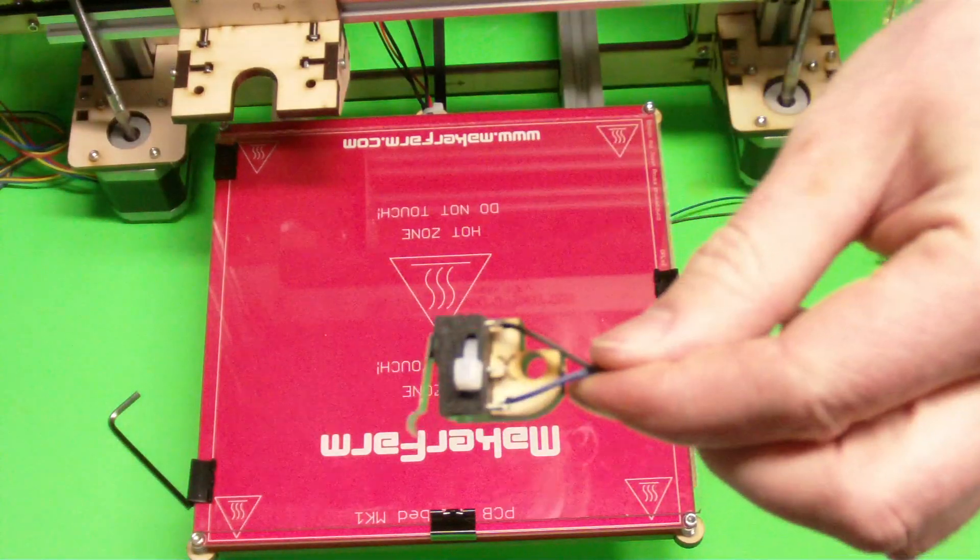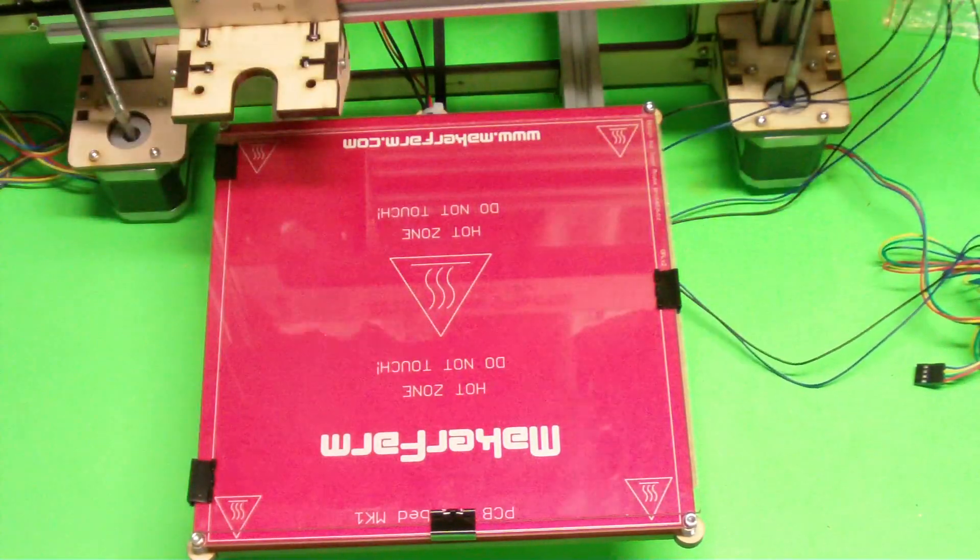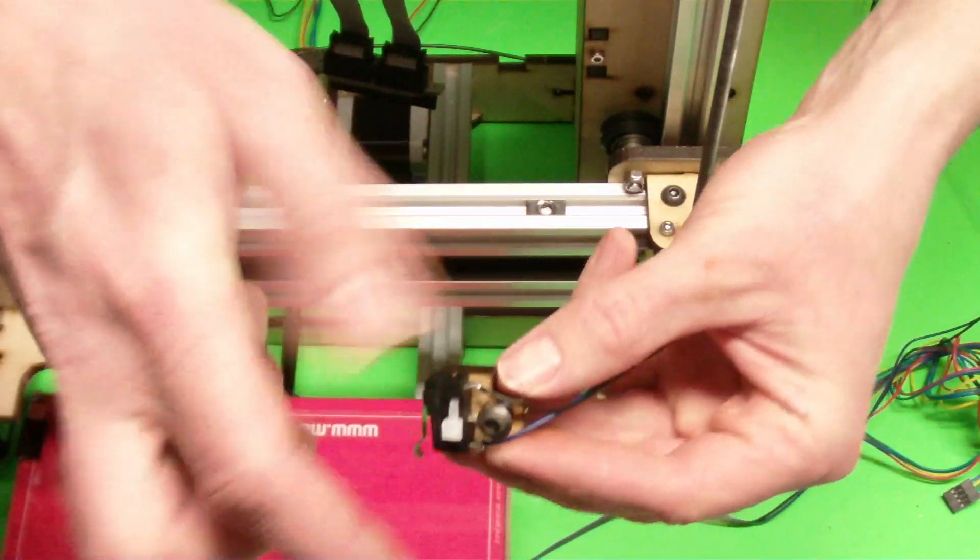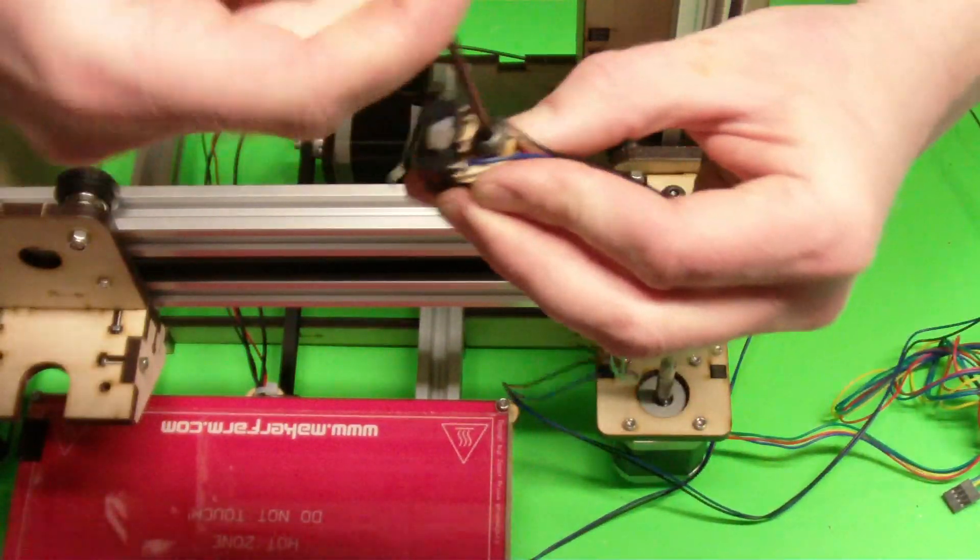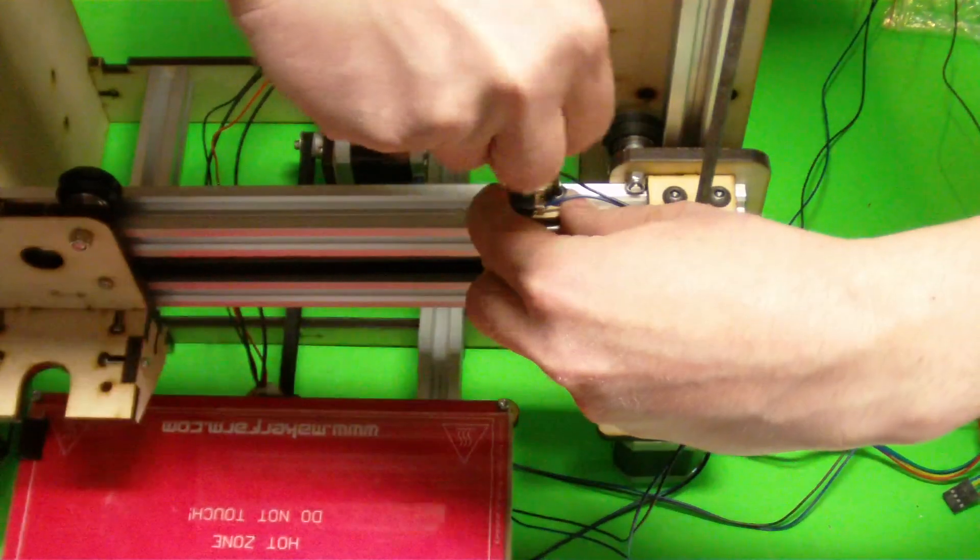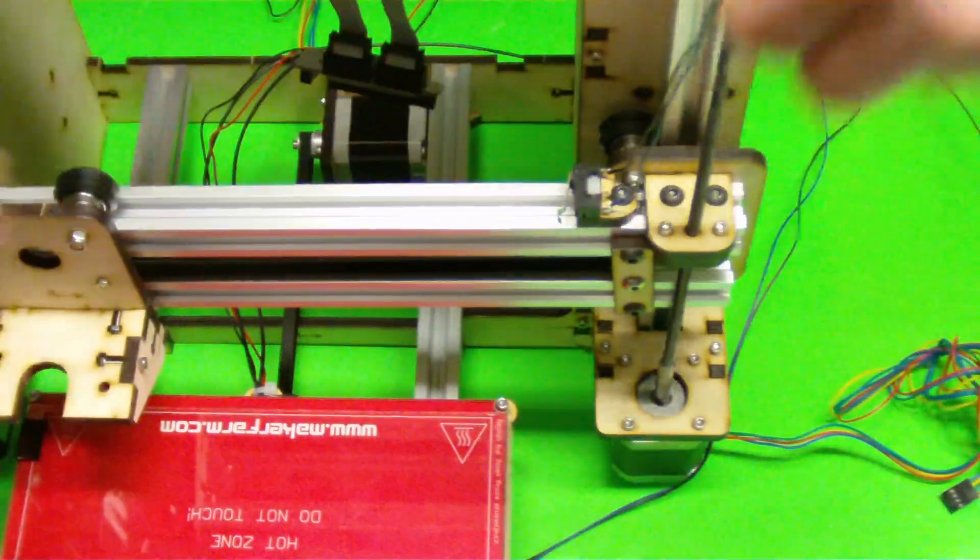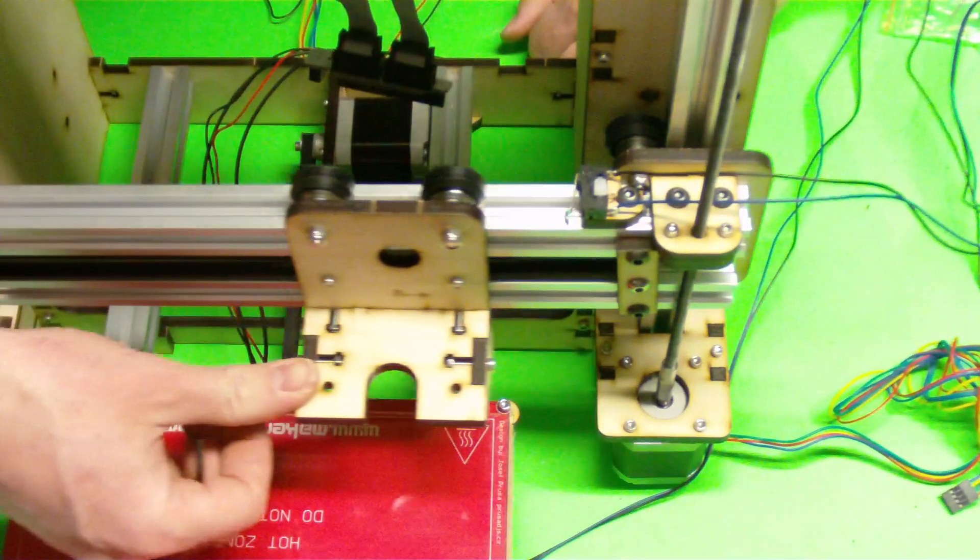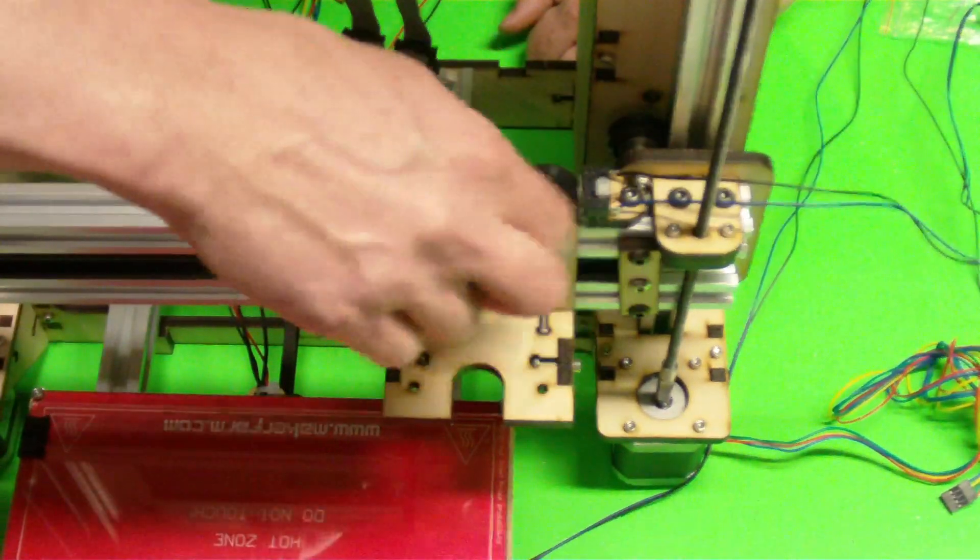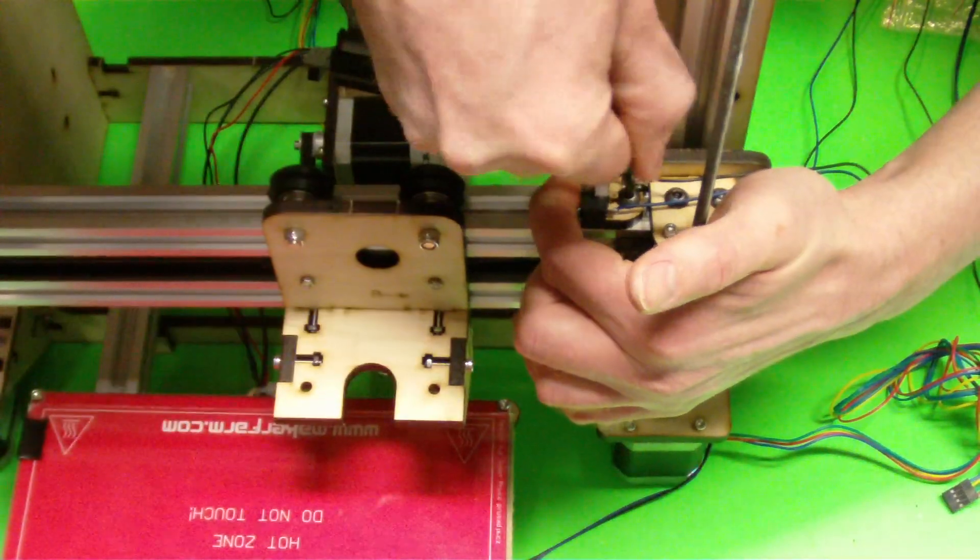Next one we're going to get is the X end stop switch. That's the one where it has the little cutout there. That's going to go up here. It goes on the side of our X idler. Just do the same thing, put that bolt in there. Put that in that T nut that's already in the extrusion. And then we can move it all the way over to adjust it. We'll adjust this more later but basically when your X axis or your X carriage comes over, it will hit that and we want that to be centered over the corner of the heat bed also.